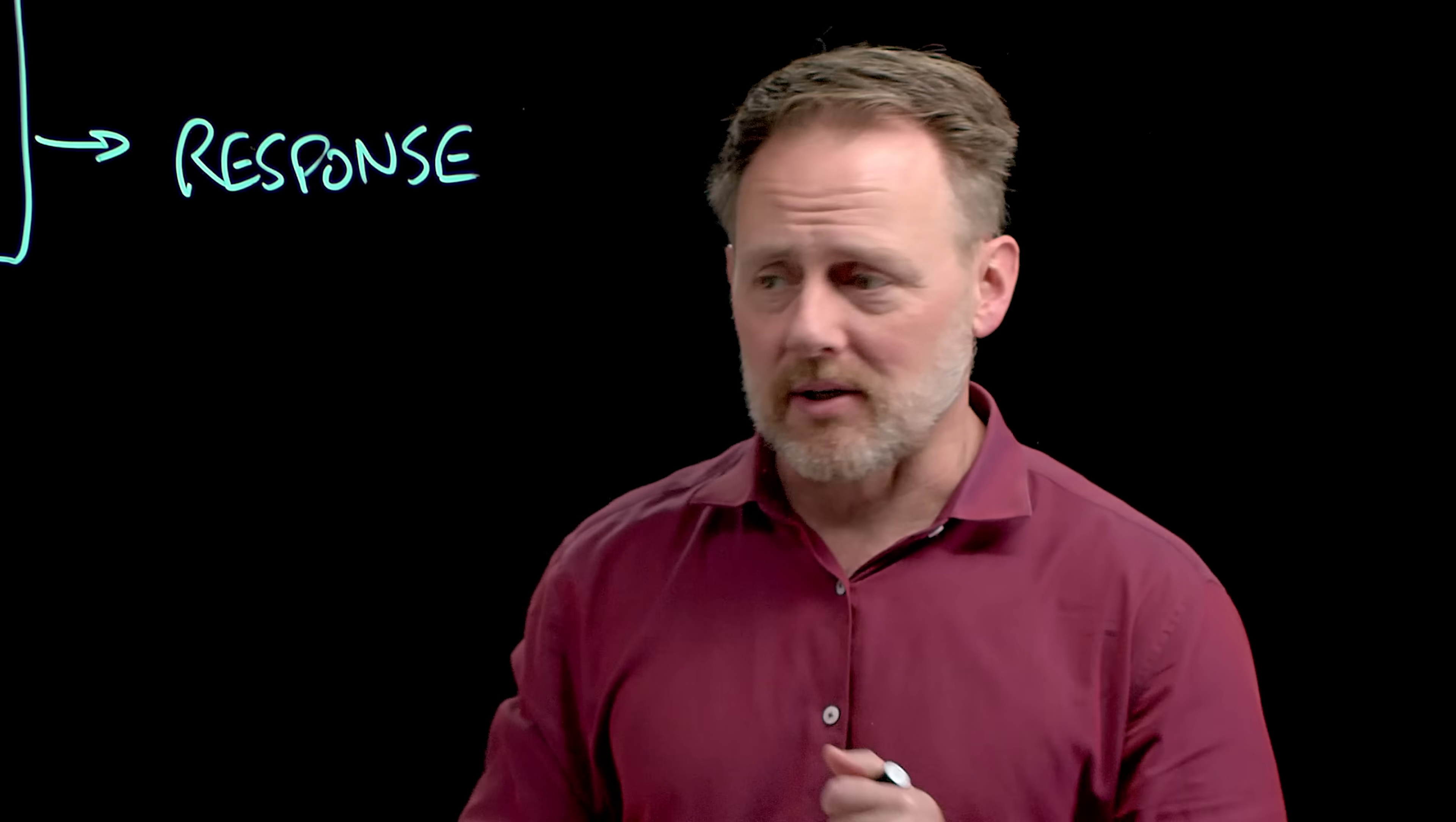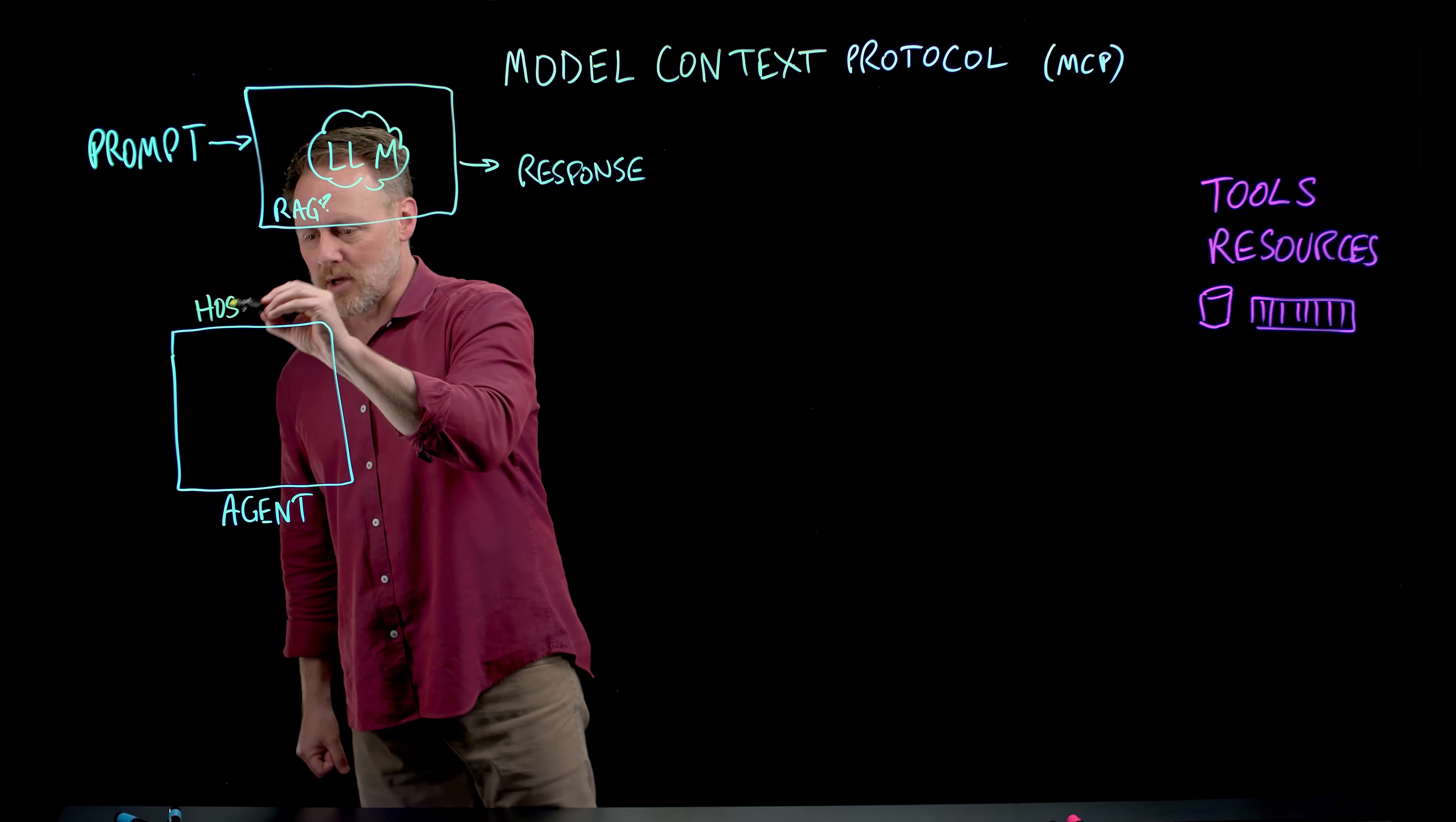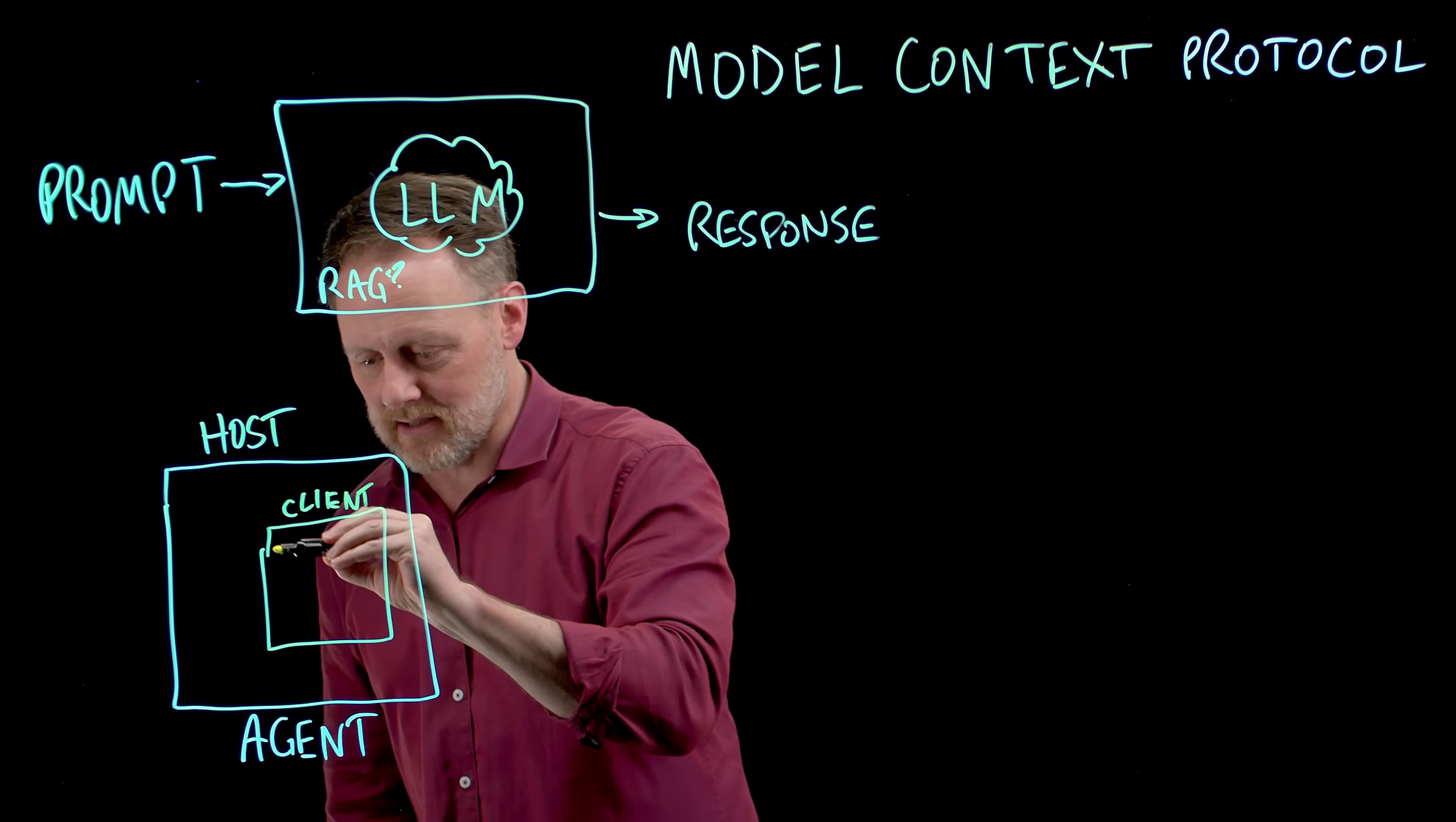Now, let's talk about a little bit of architecture. What we're doing is building an agent. You could think of it as a microservice. There's nothing particularly exotic about this. But in MCP terms, this is called the host application. And the host application uses the MCP client library to create an instance of a client in there.